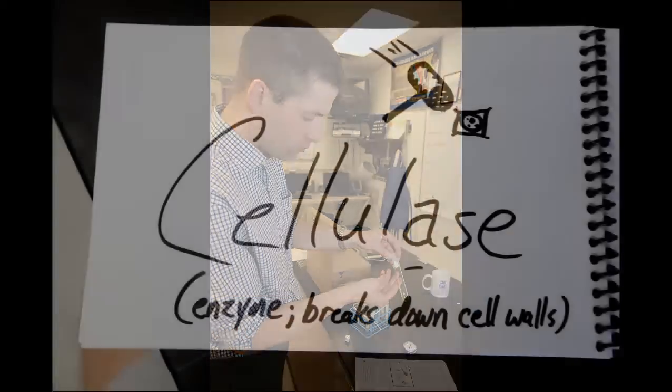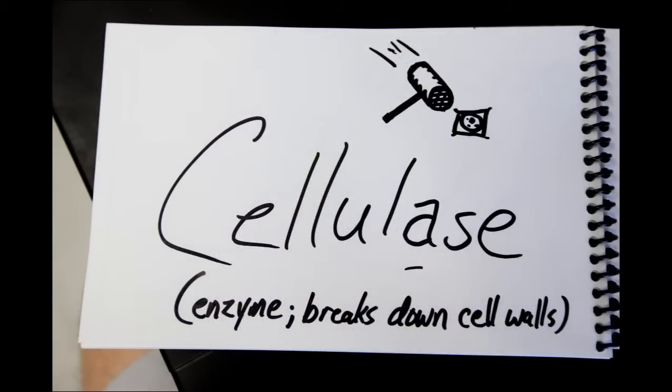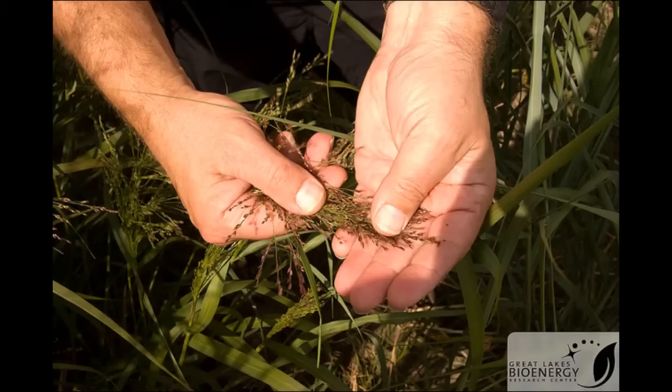Cellulase is the enzyme that breaks down cellulose, and the reason it's important for bioenergy is because cellulose is made of glucose monomers, and in order for yeast to ferment cellulose, it has to be broken down into glucose first.